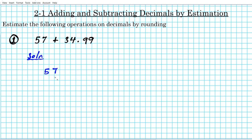So we have 57 and then 34.99. Whenever you're adding, you want to add vertically and you must line up the decimal points perfectly. So this is what we're adding: we want to add 57 and 34.99. Now in order to do this, we don't want to just find the sum — we want to estimate the sum by rounding. So it's not going to be the exact answer; it's just going to be a general estimate that gives us a general idea as to what the sum is.